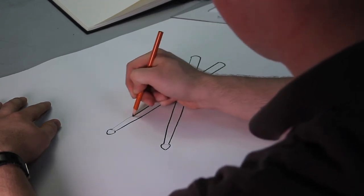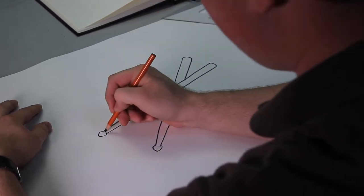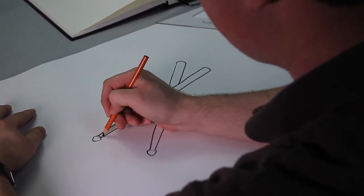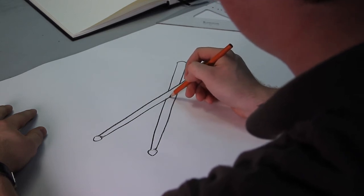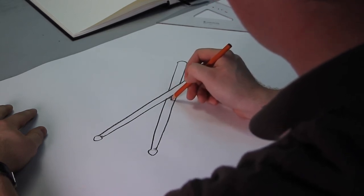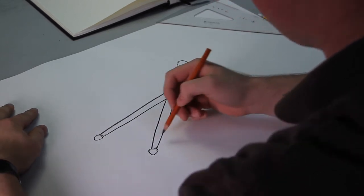And then we'll just draw a little bit of shadow right here and a little bit of shadow right here, and then there's going to be some shadows right here underneath where they crisscross.